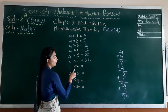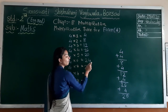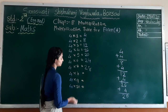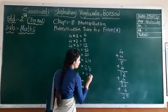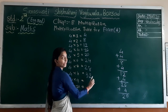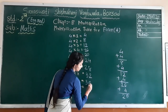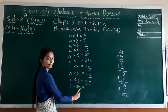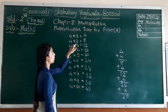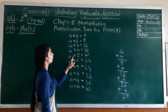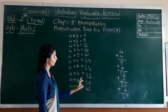Four multiplied by seven — four sevens are twenty-eight. Add four into twenty-four to get twenty-eight. Four multiplied by eight — four eights are thirty-two. Add four into twenty-eight to get thirty-two. Four multiplied by nine — four nines are thirty-six. Four multiplied by ten — four tens are forty.